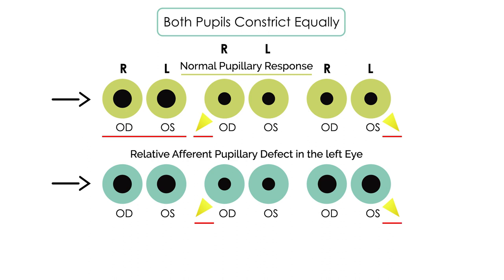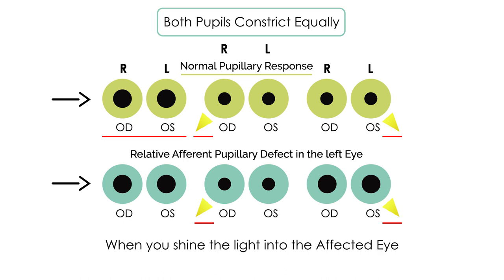But then you shine the light into the affected eye — in this case the left eye. Notice what happens: when you shine the light into the affected eye, the pupils actually dilate. This is also sometimes referred to as the swinging light test, where you first shine the light in the unaffected eye and then swing the light over to the affected eye, revealing this pathological finding.